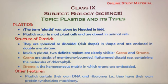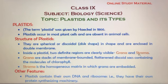The outer membrane acts as a cover, while the inner membrane surrounds more advanced structures inside the plastid. Two definite regions are clearly visible inside plastids: grana and stroma. Grana are stacks of membrane-bound flattened discoid structures.